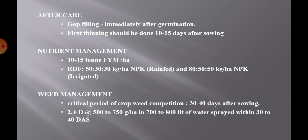After care: Gap filling immediately after germination and first thinning should be done 10 to 15 days after sowing. Nutrient management: Apply 10 to 15 tons of FOM per hectare. The recommended dose of fertilizer for rain-fed crop is 50-30-30 kg NPK per hectare and 80-50-50 kg NPK per hectare for irrigated conditions.